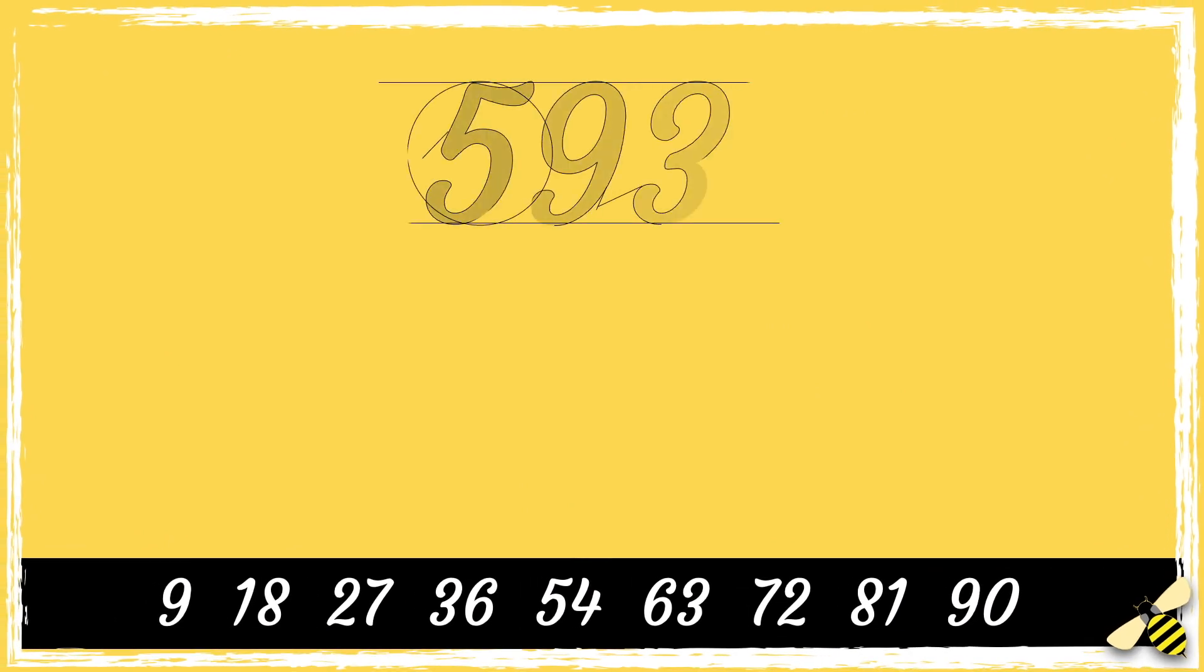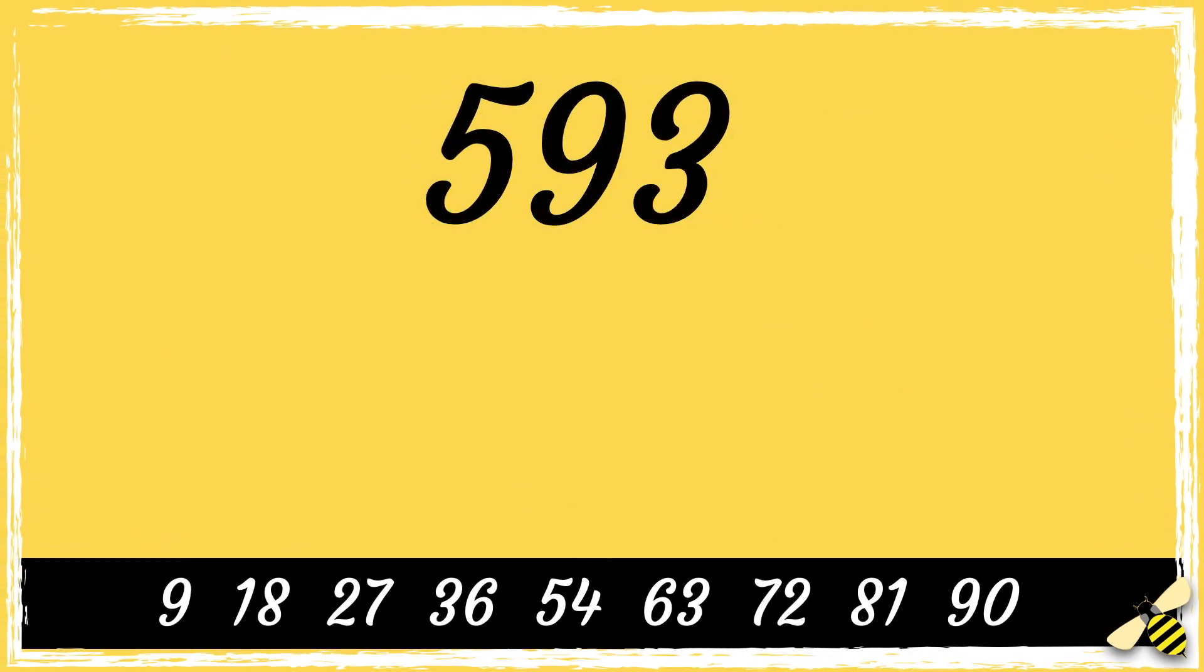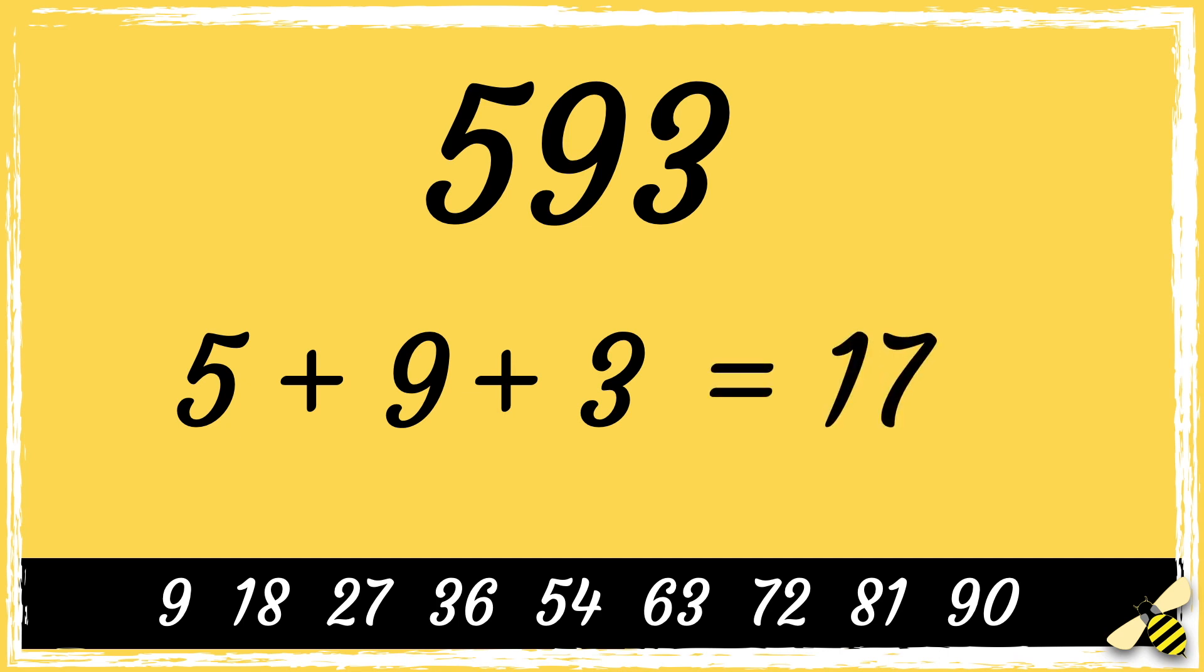Let's have a look at another one. 593. So first, we add the digits. 5 add 9, add 3, equals 17. 17 is not a multiple of 9. So that means that 593 is not divisible by 9.